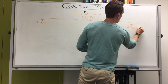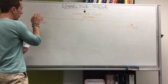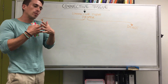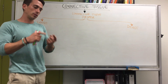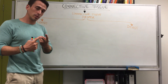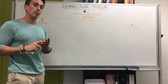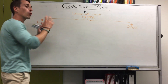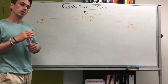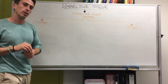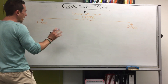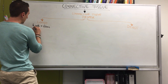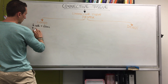Starting with connective tissue proper loose — remember from the introductory video that the primary substances shared amongst connective tissue are the cells, the ground substance which makes up the majority of the extracellular matrix, and the fibers. With loose connective tissue proper, think of a loose arrangement of fibers and cells within the extracellular matrix. There are less cells and fibers and more ground substance.